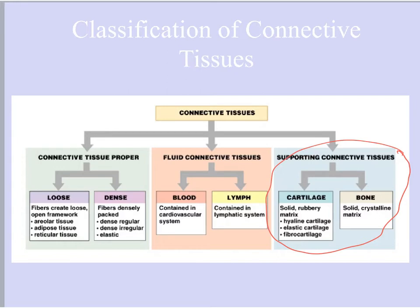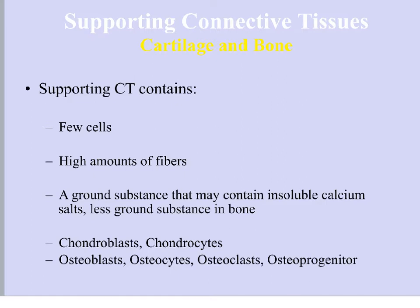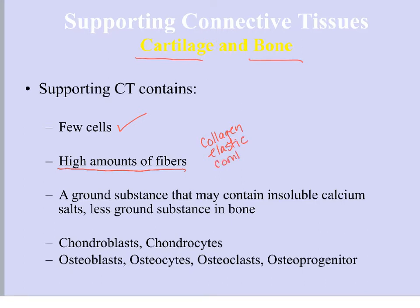This is almost the opposite of connective tissue proper, where you had a gelatinous or more watery type of ground substance, a variety of cells, and a variety of fibers. Supporting connective tissue is going to be much more highly specialized. The two types are cartilage and bone. With supporting connective tissue you have much fewer cells than we've seen in other types of connective tissues and much higher amounts of fibers. The fibers present can be collagen fibers, elastic fibers, or a combination of both.